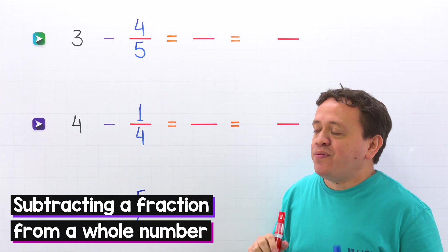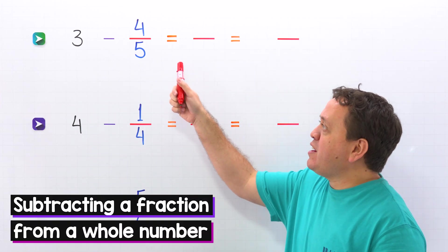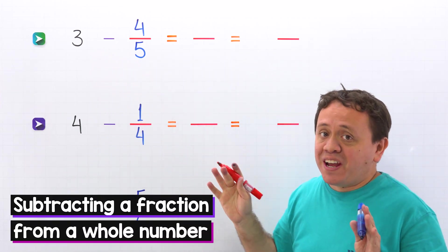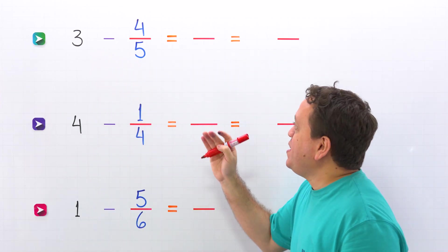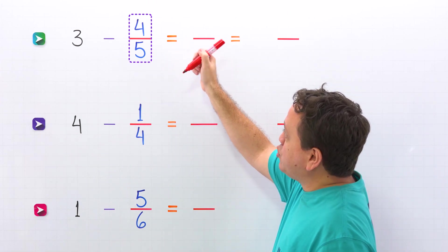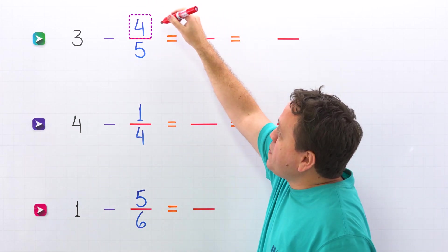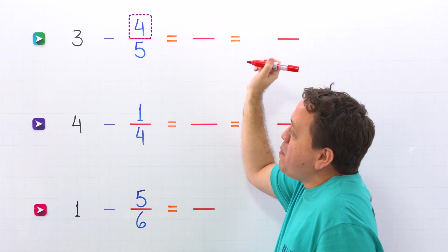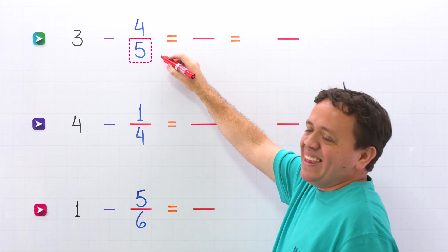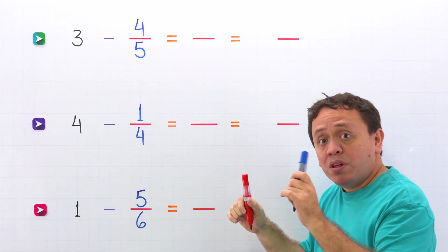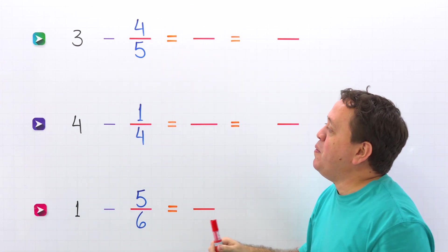Today I'm going to show you a little shortcut for subtracting a fraction from a whole number. Before getting into it, we just need to remember that in a fraction like this one, the top number is the numerator and the bottom number is the denominator. Are you ready for the first example?